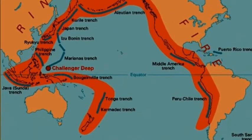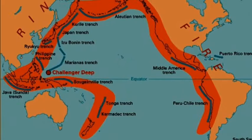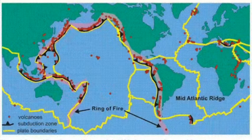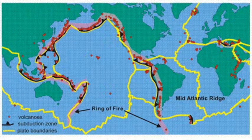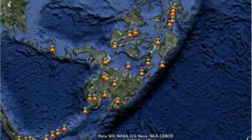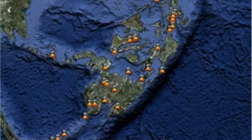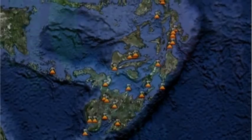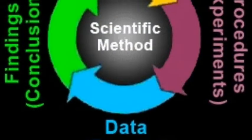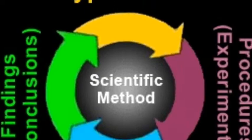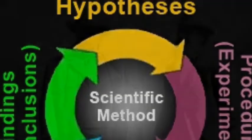Students will then complete a series of activities based on the Pacific Ring of Fire, a pattern of locations of volcanoes and earthquakes that can be used as evidence for Alfred Wegener's theory. This will be the first time that students are asked to form a hypothesis, an important part of the scientific method.